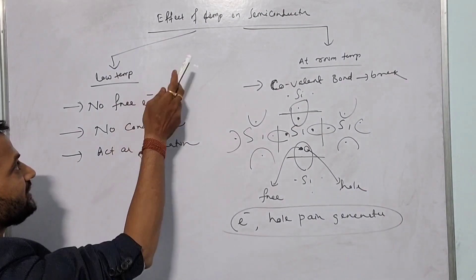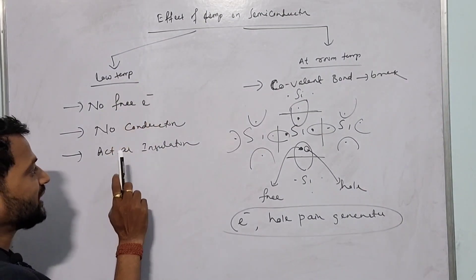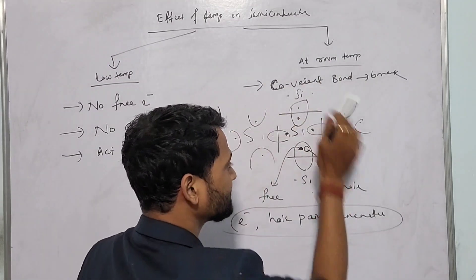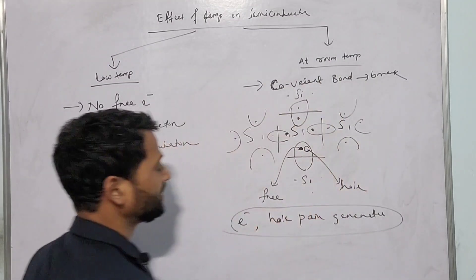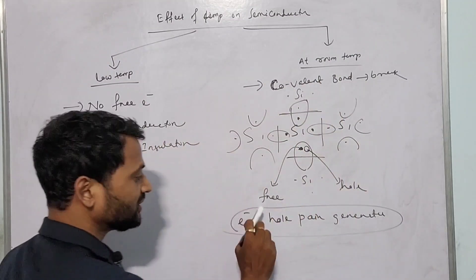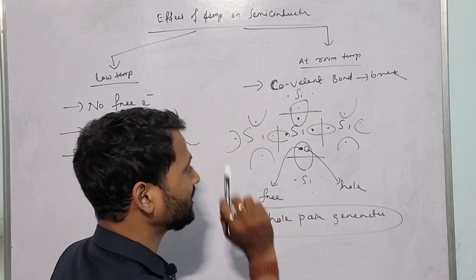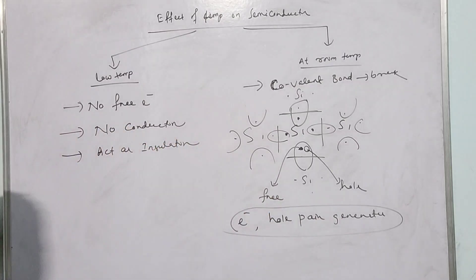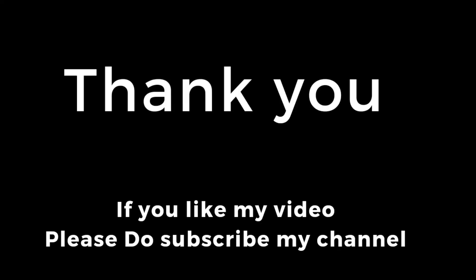So, at low temperature that semiconductor will act as an insulator, but at room temperature it already has some conductivity due to the generation of electron-hole pairs. That is what I have explained today. Thank you so much for watching. Thank you.